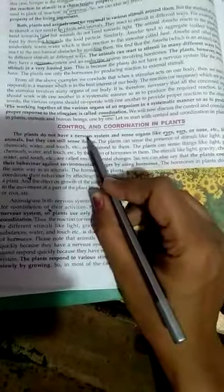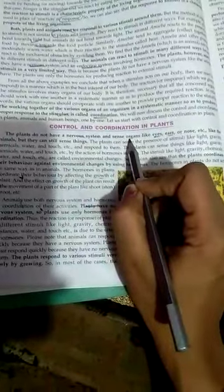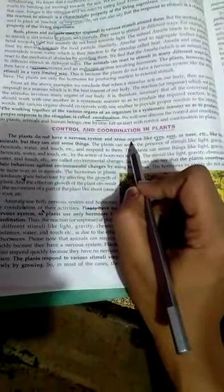As you all know, plants have no nervous system and they do not have sense organs like eyes, ears, or nose.